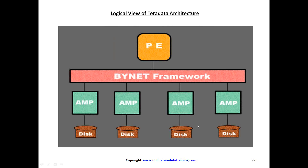This is the Logical View or Logical Diagram of Teradata Architecture. At the top we have PE, the Parsing Engine, which is connected to Binet. From Binet, each AMP is connected. This diagram shows a four-AMP system, so you can see four AMPs here. Each AMP is connected with its own disk, and there is no cross connection between AMPs.